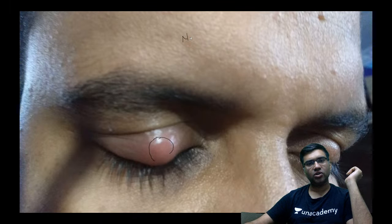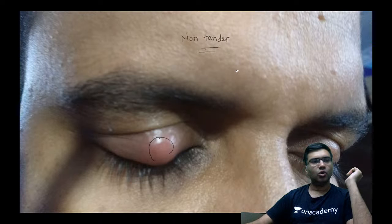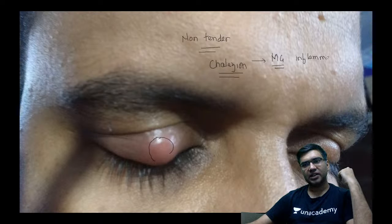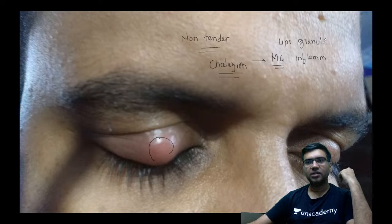In this image the patient has a non-tender nodule over the eyeball, which can cause a foreign body sensation. This is called a chalazion. A chalazion is a meibomian gland inflammation — specifically a chronic lipogranulomatous inflammation.